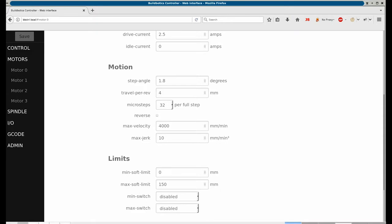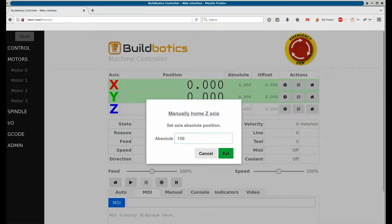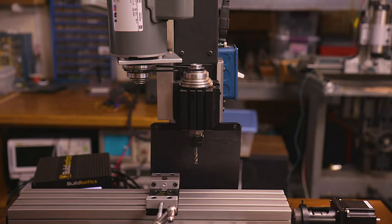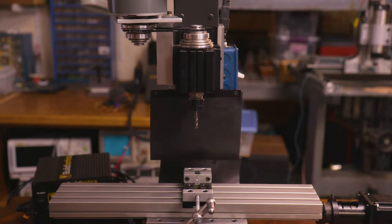Now we can home the machine using the manual homing feature and take it for a test drive. The BuildBotics controller's high microstepping and S-curve acceleration make movement smooth, fast and accurate.